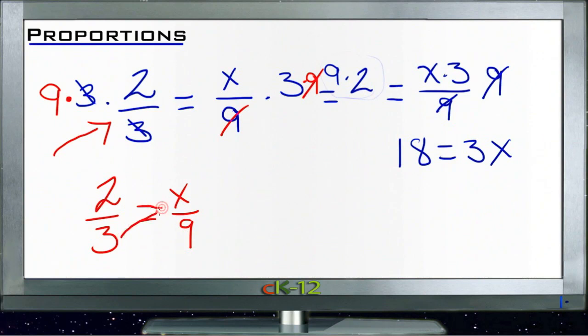I can just shorten my writing and just multiply the denominator of each side by the numerator on the other side. So we get nine times two, which gives us 18 on one side, and three times x, which gives us 3x on the other side.